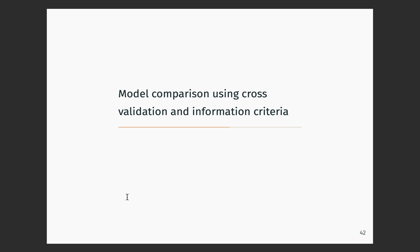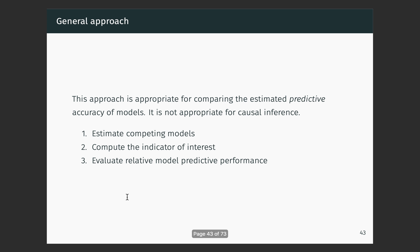So here's how we'd use this in practice. We estimate competing models, compute some indicator of interest, and evaluate relative model predictive performance across those models. Keep in mind this is totally inappropriate for causal inference — for causal inference, what should guide you is not predictive accuracy but the implications of your causal theory. You think about what can I test with this model, do I observe what the causal theory says I should test, and you push there. Your goal is absolutely not predictive accuracy in a causal framework.